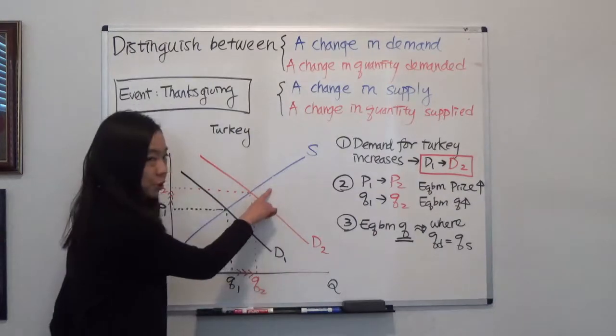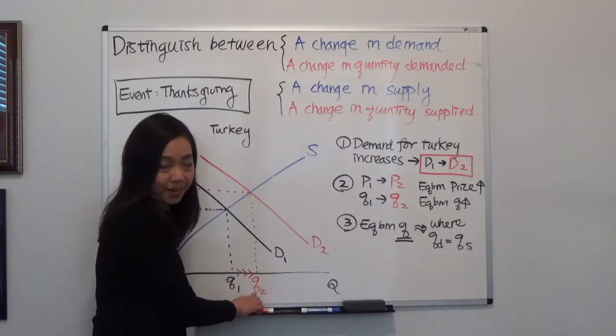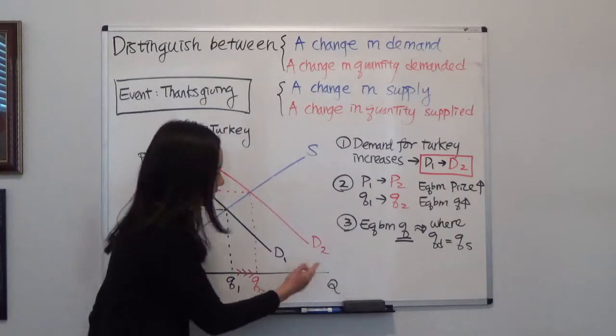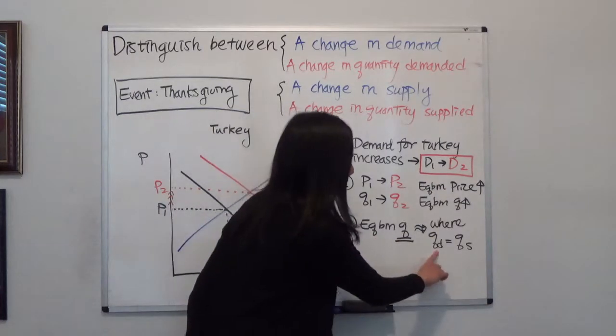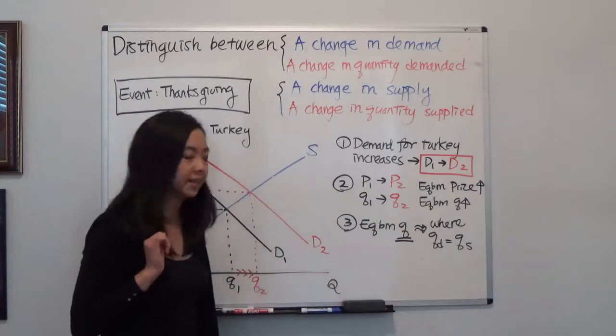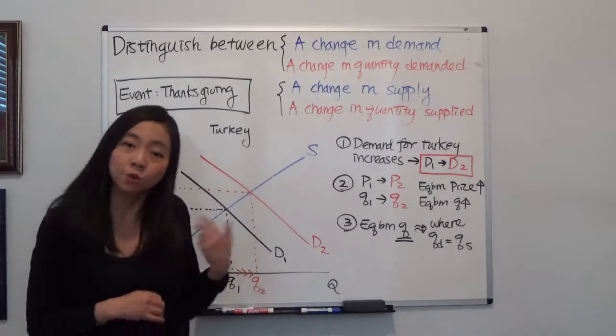So supply didn't change, but the quantity supplied, or equilibrium quantity—basically equilibrium quantity is where quantity demanded equals quantity supplied—has gone up.